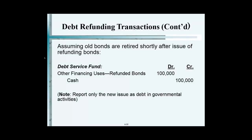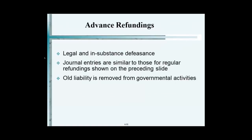They got money after they got the money. Advanced refunding — again, a very technical transaction, and I won't go too much into it, except to tell you that in many cases, I was actually involved in one of these — a very big transaction, like $96 million, where we had to do debt defeasance.